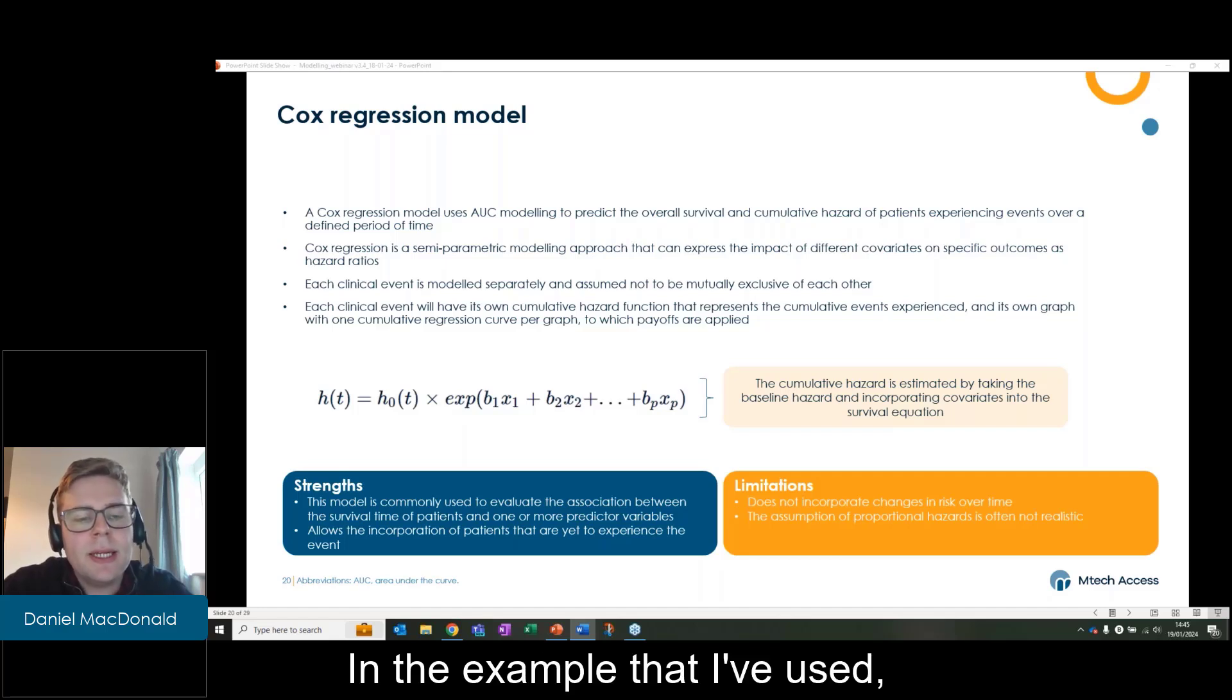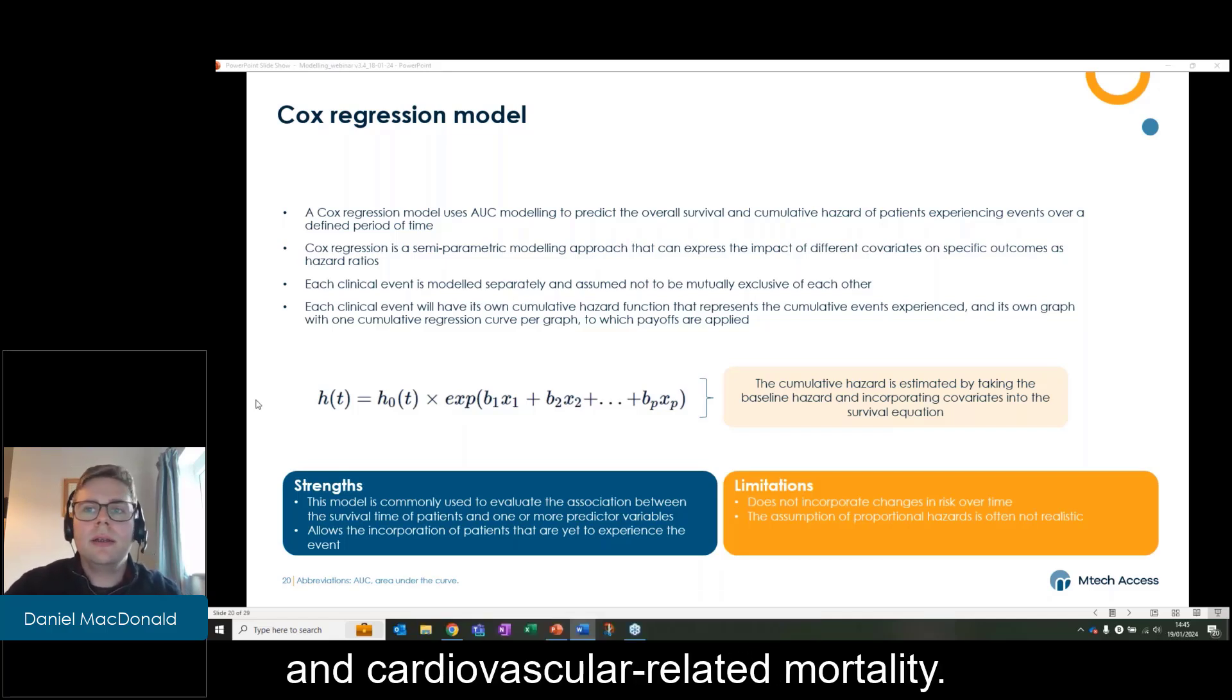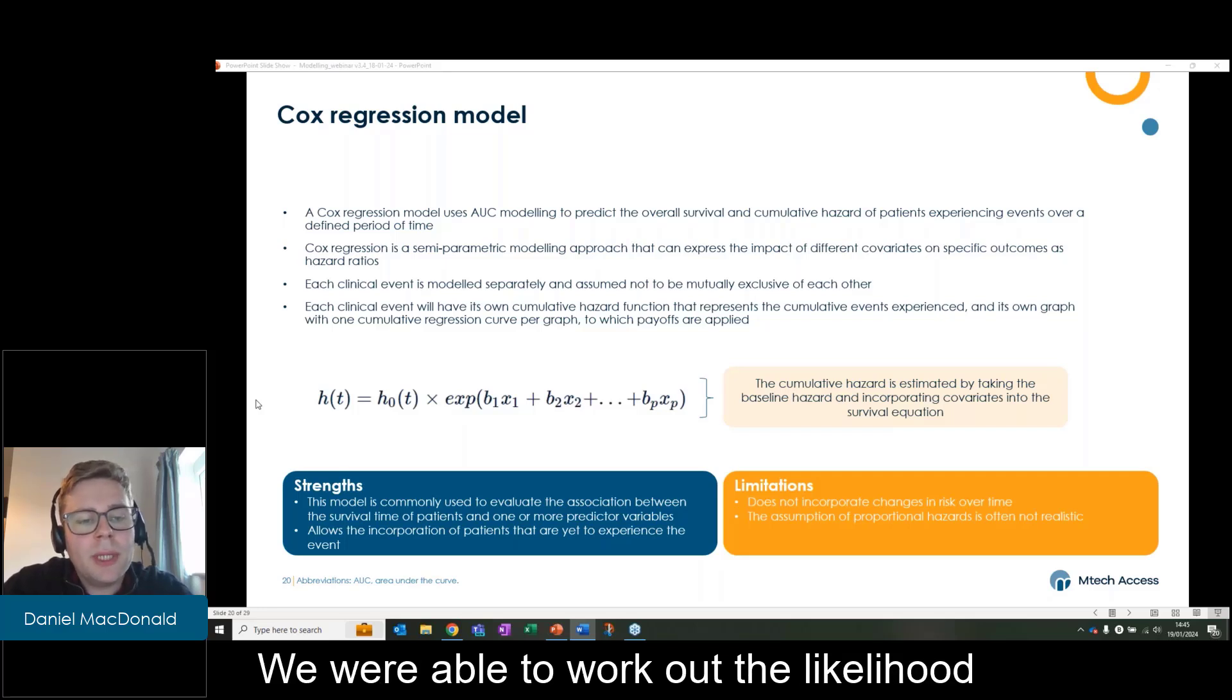In the example that I've used, we use this for several events. So we worked out, for example, heart failure and cardiovascular-related mortality. We were able to work out the likelihood of each event occurring.